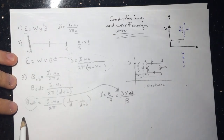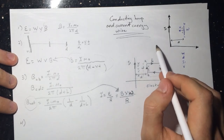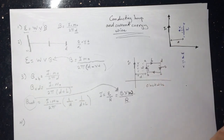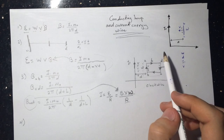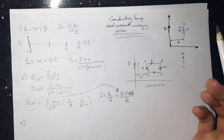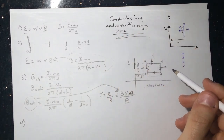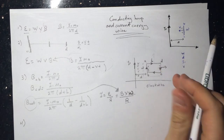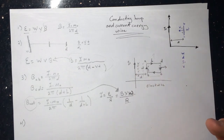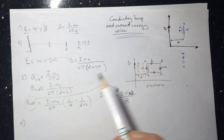Question four asks: if this loop was moving upward instead, what would be the induced EMF or current? If the loop moves up or down, the magnetic field is not changing — the flux depends on the distance from the wire, and moving parallel to the wire doesn't change that distance. So the flux stays the same and there would be no induced current.